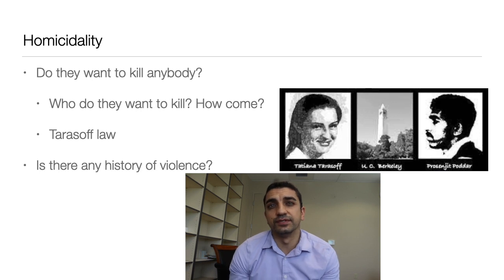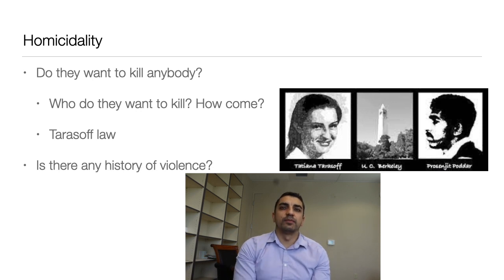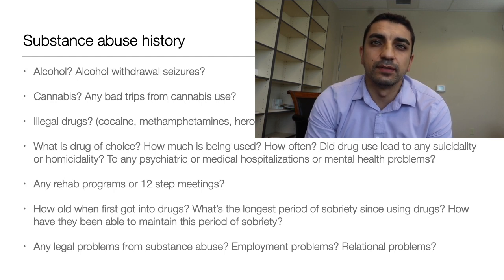Not as common as suicide, but also important to assess is homicidality. You ask if they have any thoughts of killing anybody, who they want to kill, what plans they have, and whether they've tried to act on it in the past. There is a law in California called the Tarasoff law, which gives clinicians a duty to warn whoever is the target. This stemmed from a UC Berkeley foreign exchange student who had a romantic fixation on a girl who didn't return it. He told his therapist he wanted to kill her, the therapist didn't warn the girl, and he did go on to kill her. So clinicians have a duty to warn people who are at risk of homicide.